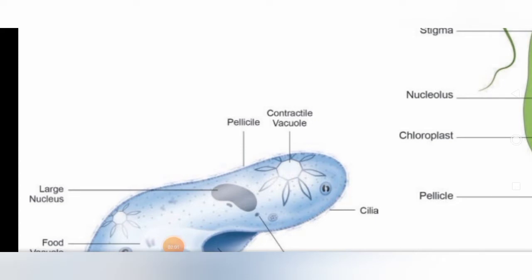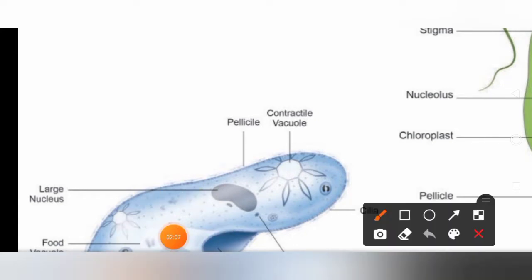Are you able to identify the various cilia? It also has contractile vacuoles. What is the use of contractile vacuoles? It excretes. And food vacuoles are also there. These food vacuoles are useful for digestion or intake of food.